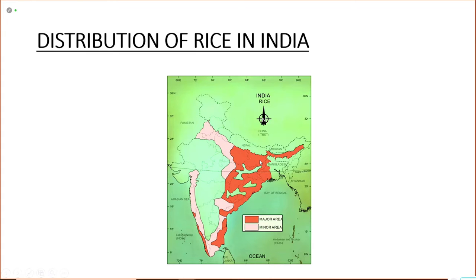The major rice growing areas cover the eastern part of UP, Bihar, West Bengal, Andhra Pradesh, the deltaic region, the coastal areas and the Indo-Gangetic plain. Rice is also grown with the help of irrigation in Punjab, Haryana, the northern part of Rajasthan and the western part of UP, as rice requires a greater amount of rainfall.